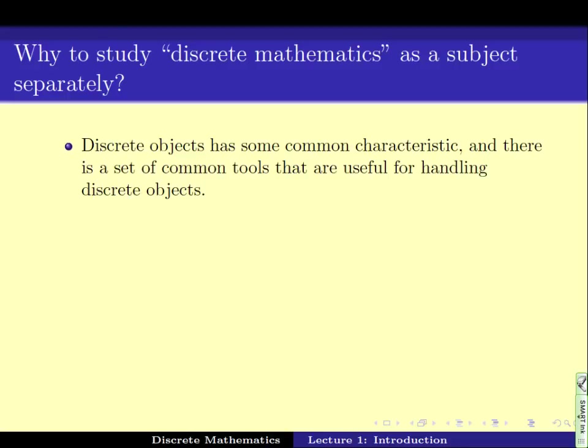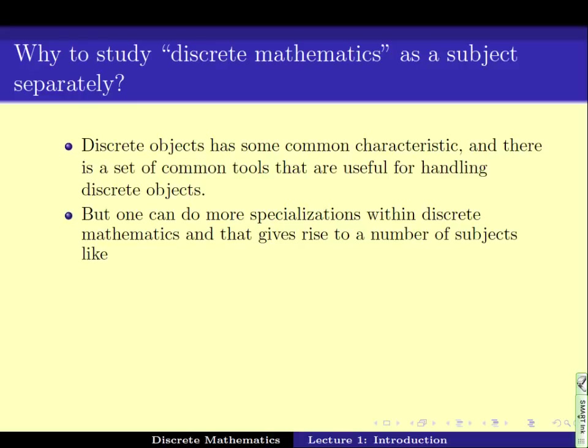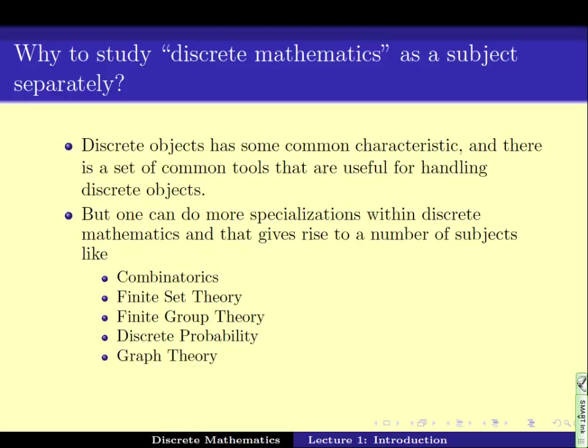But depending upon some more properties of the discrete objects, the tools can be revised, can be made better. And this gives rise to a number of different subjects, which are much more focused. For example, combinatorics, finite set theory, finite group theory, discrete probability, graph theory, Ramsey theory, and the list goes on. These are all subjects that are special cases of discrete mathematics as a subject. Thus, in other words, in discrete mathematics, we take a high level view of all of these subjects and more.